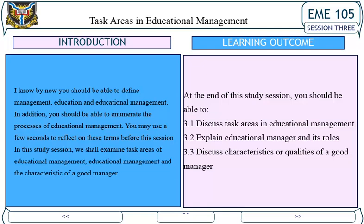In this study session, we shall examine task areas of educational management, educational management, and the characteristics of a good manager. Learning outcomes for study section 3: At the end of this study session, you should be able to discuss task areas in educational management, explain educational manager and its roles, and discuss characteristics or qualities of a good manager.